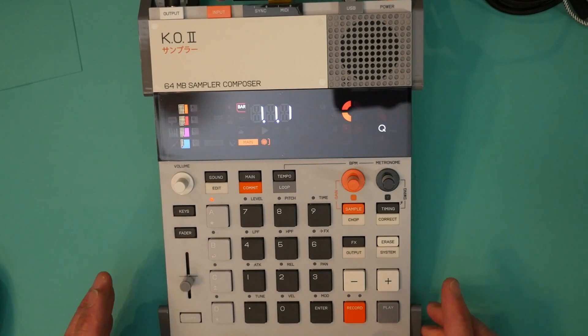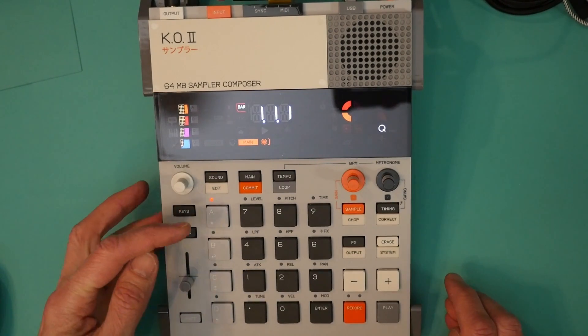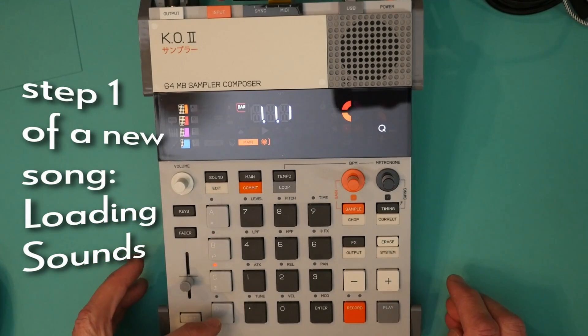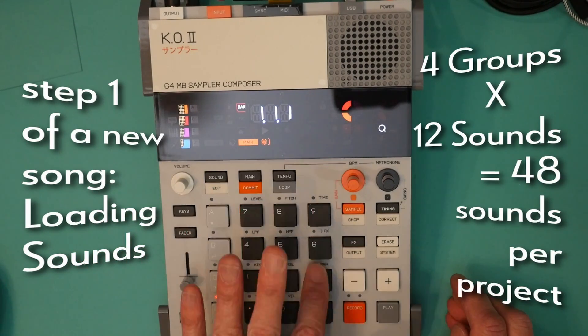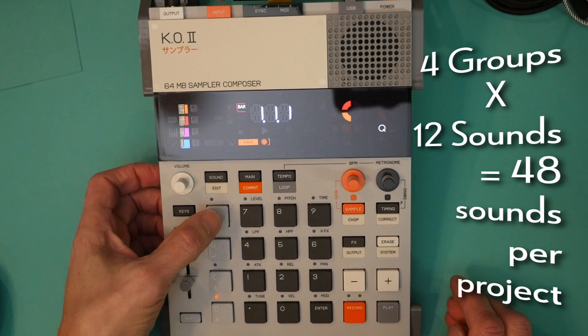Now we're going to load sounds into the four groups. That is, each group A, B, C, and D hold 12 sounds each. One for each pad. And we're going to load all of them.